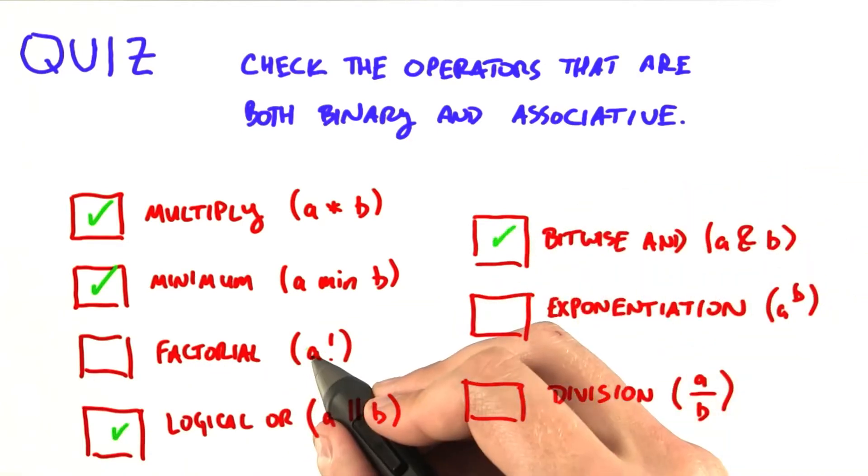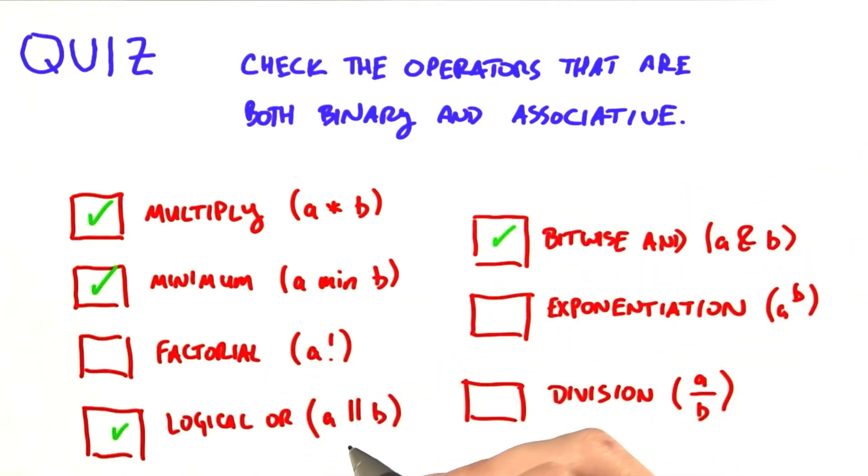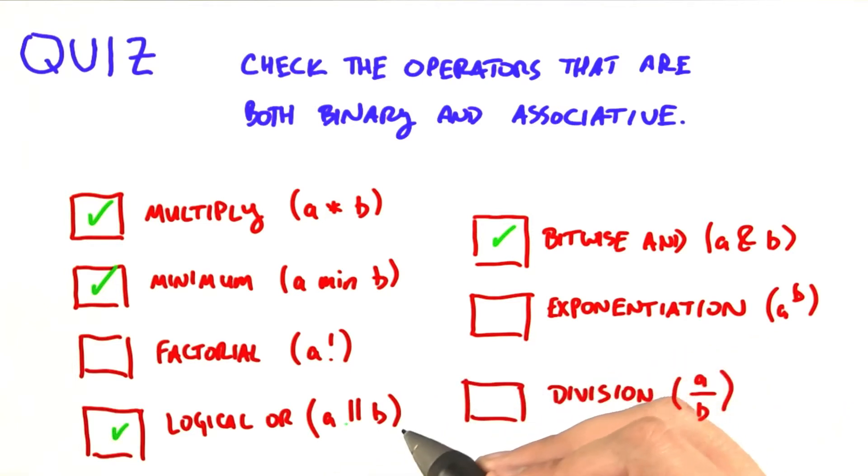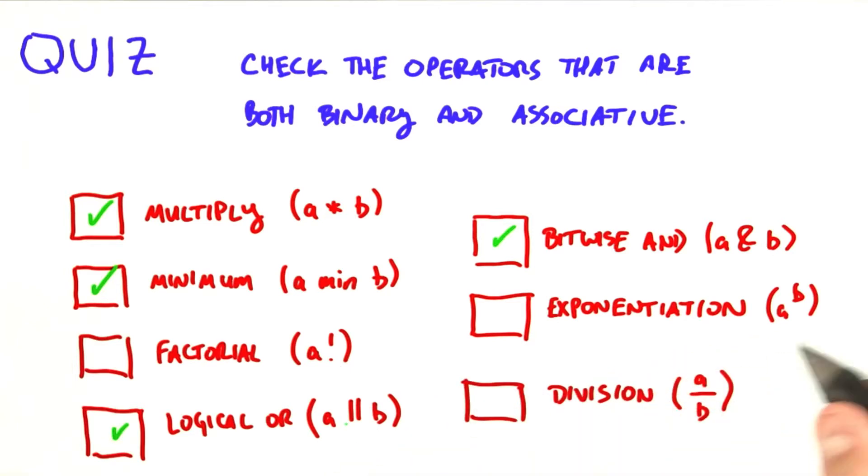Factorial is not binary. It only has one argument, and it needs two arguments to be binary.